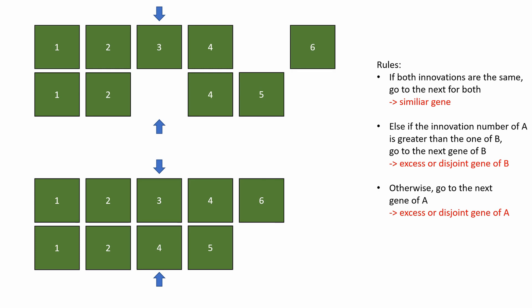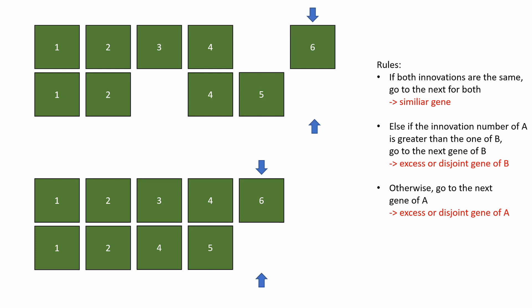Now the same again, and we would realize that in reality there's a disjoint gene of A. We would see that the innovation number of B is greater than the innovation number of A, so we would have the third case and we have an excess or disjoint gene of A. We will not talk about excess genes yet, only about disjoint genes. So we would go to the next gene of A. Next we would compare four and four, and then increase both of them and compare five and six. We would see that we're comparing five with nothing, so we would have a disjoint gene in B — the second rule. The innovation number of A is greater than one of B, and we would go to the next gene of B. In this case there are no genes left, so we might have to handle this in Java, but we would go right into the code.